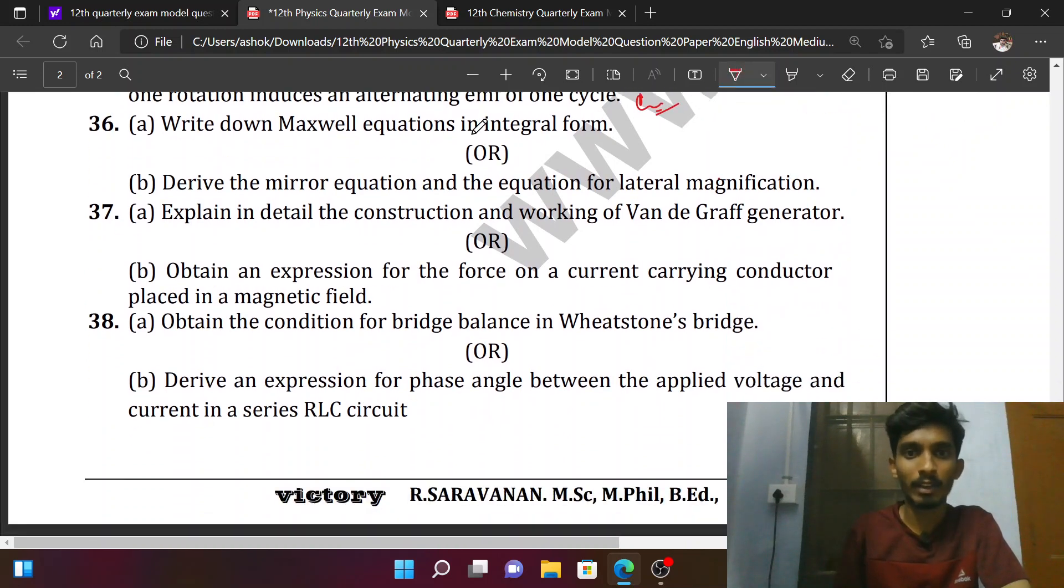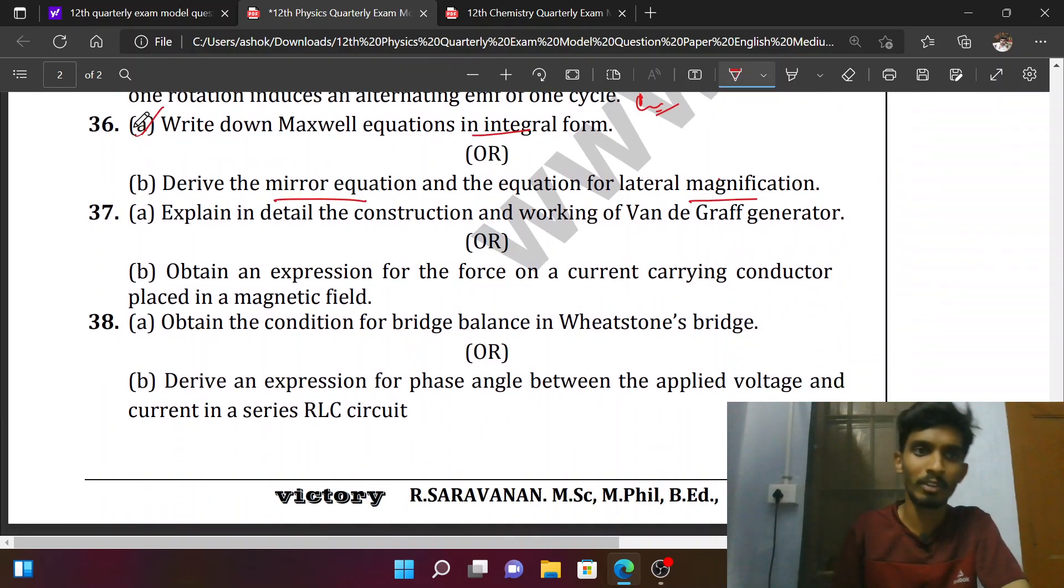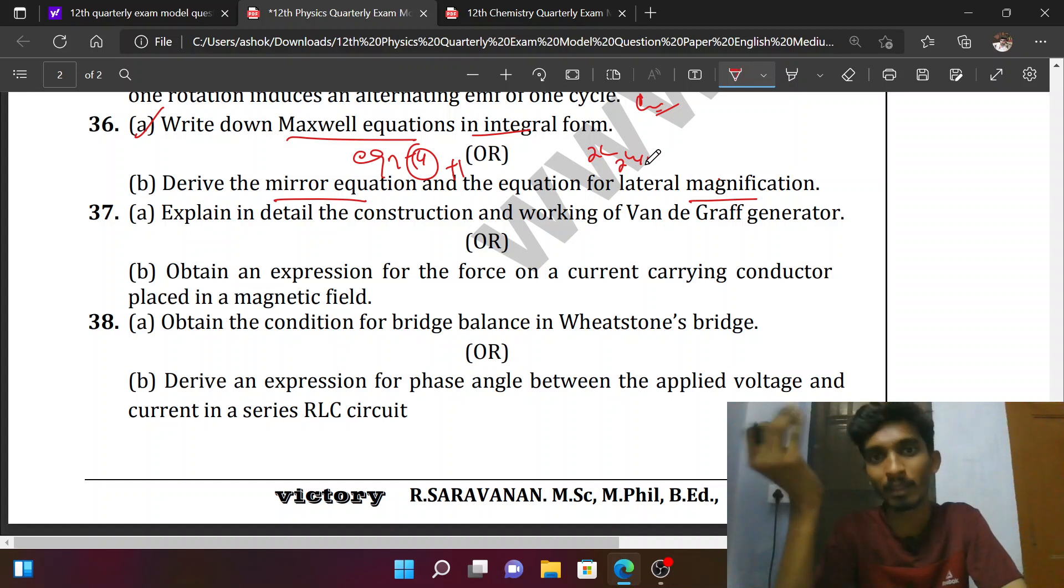Maxwell equations in integral form or mirror equation and lateral magnification. Maxwell equation is 4 equations. The theory is 1. It will be bookwork. If you want to learn properly, each teacher will teach the same thing. If you follow each other's teachers, you will learn the same thing. But in bookwork equations, you will learn 4 equations with their theory. If you want to just diagram this equation, you can derive the lateral magnification.